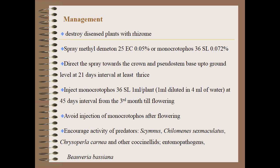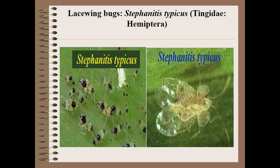Note: avoid injection of monocrotophos after flowering — monocrotophos injection is only up to flowering from the third month. Also encourage the activities of predators like Cheilomenes sexmaculatus, Chrysoperla cornea, and other coccinellids. Also use the pathogen Beauveria bassiana.